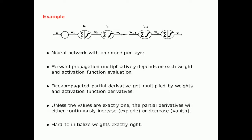What is going to happen is that the partial derivative will either continuously increase as you go back during backpropagation — which is called an explosion of gradients — or they will continuously decrease, which is called a vanishing of gradients. When you update your neural networks, even if you update by a very large amount in the later layers, in the early layers your updates are going to be very small, so convergence will become extremely slow.